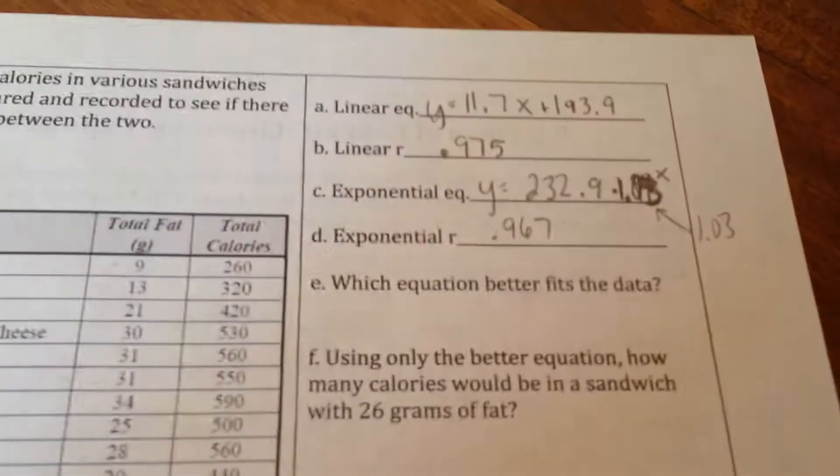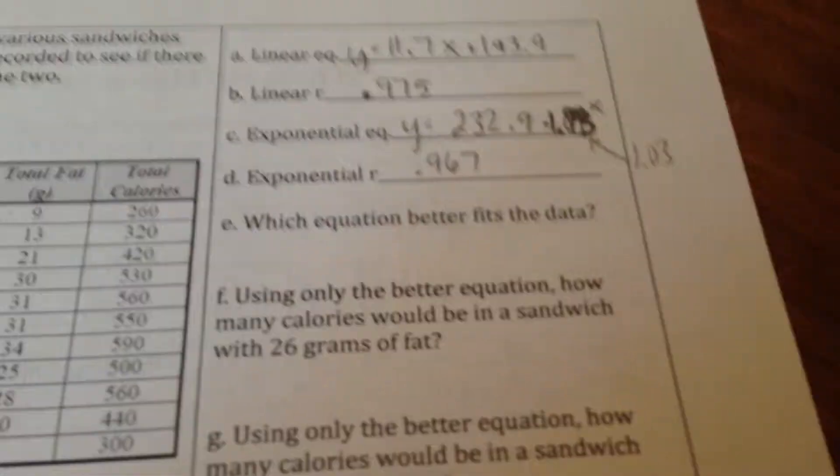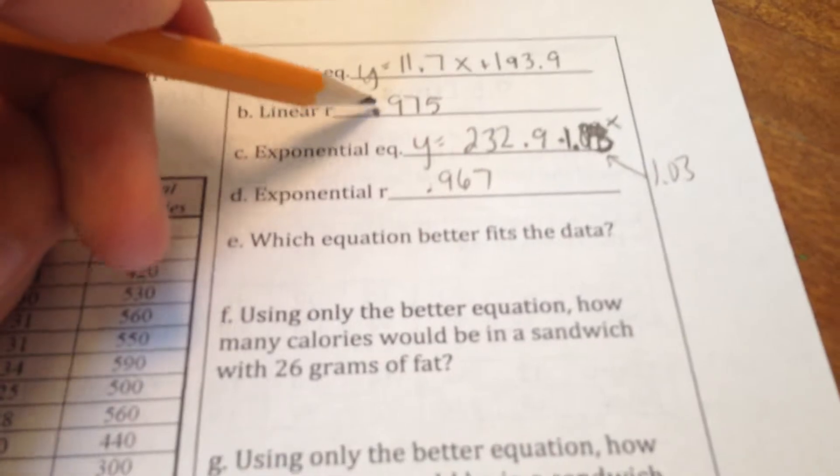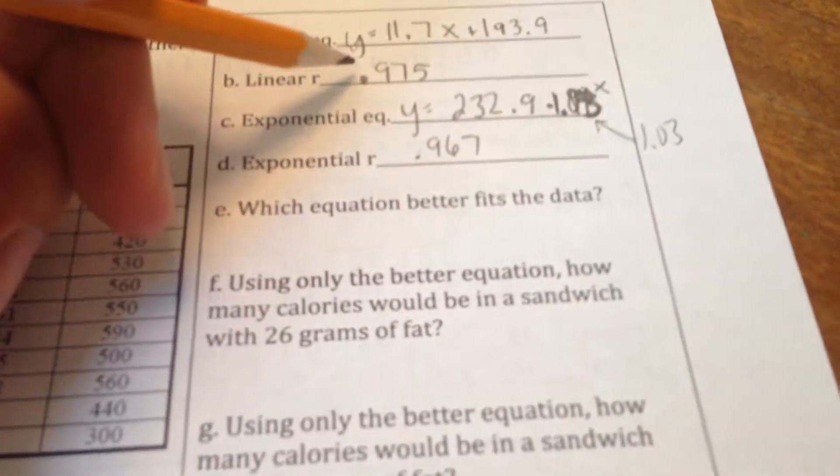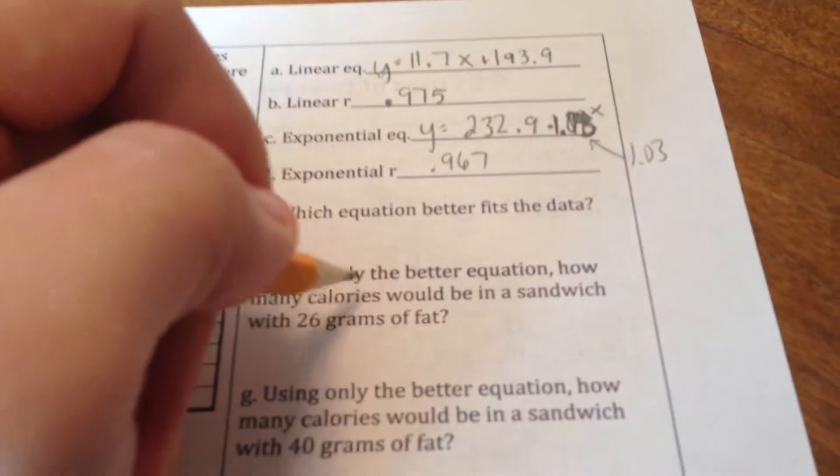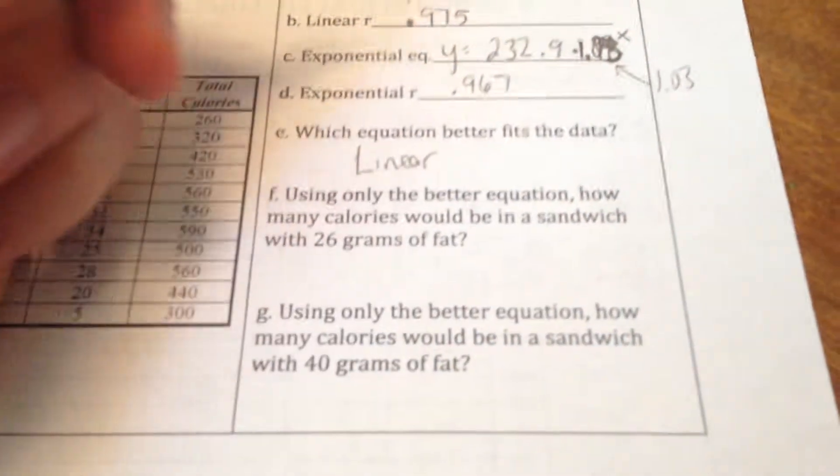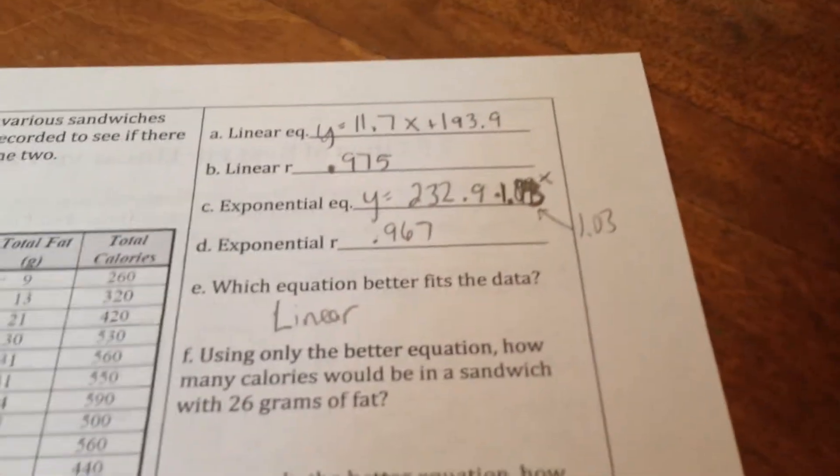But we need to figure out, to answer part E, which equation better fits this data? Well, it's going to be the one that's either closest to 1 or closest to negative 1. So in this example, this number right here is closer to 1. So the equation that best fits the data is going to be the linear equation.